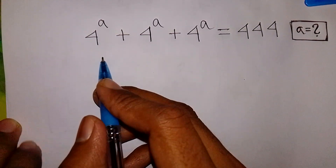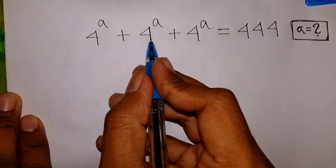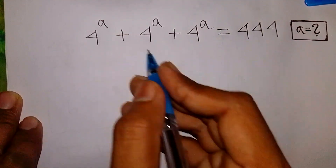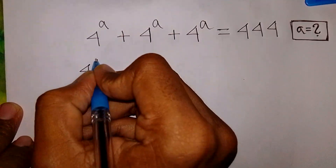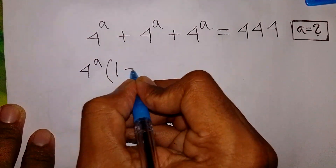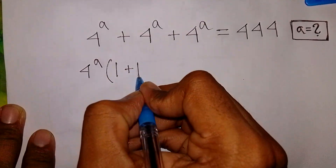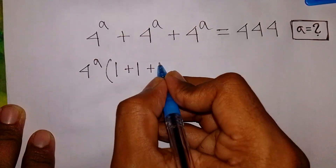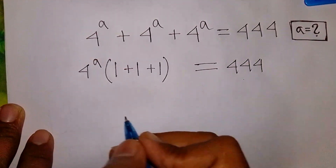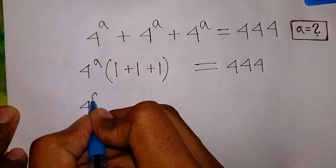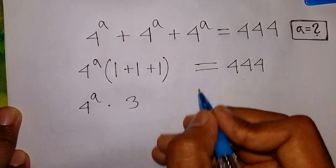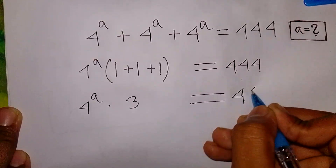Can you solve this math Olympiad algebra problem: 4 power a plus 4 power a plus 4 power a is equal to 444. Find the value of a. First, we take 4 power a common out of the bracket: 4 power a times 1 plus 1 plus 1 is equal to 444.